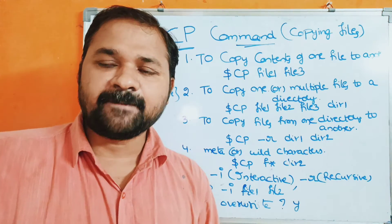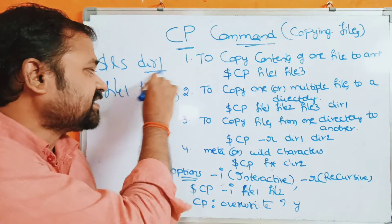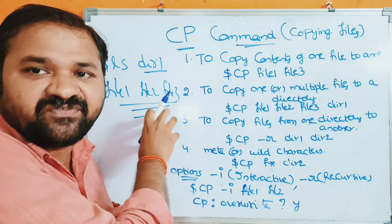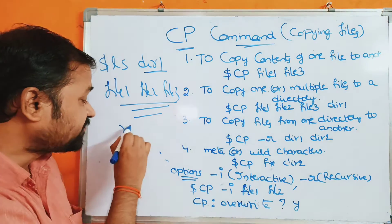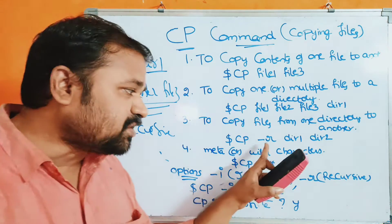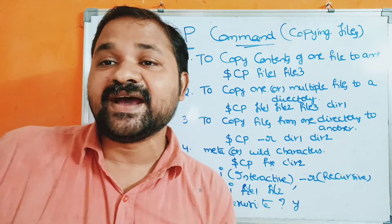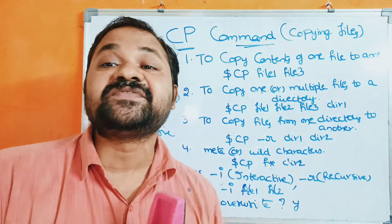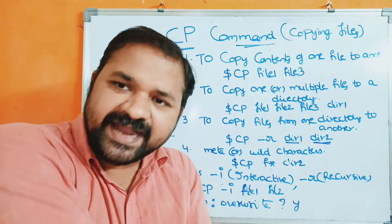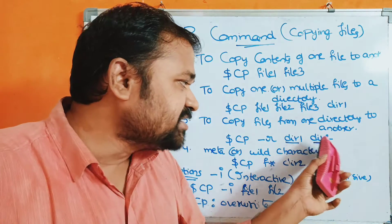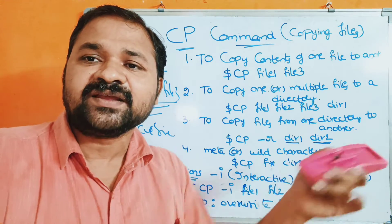The third advantage is we can copy files from one directory to another directory using the cp command. For this, we use the -R option, where R stands for recursive. Without the -R option, it is not possible to copy files from one directory to another, because a directory may contain files and subdirectories that need to be copied recursively. Here directory1 is the source directory and directory2 is the destination. The destination may be a new or already existing directory — if new, it will be created; if existing, its contents will be overwritten.